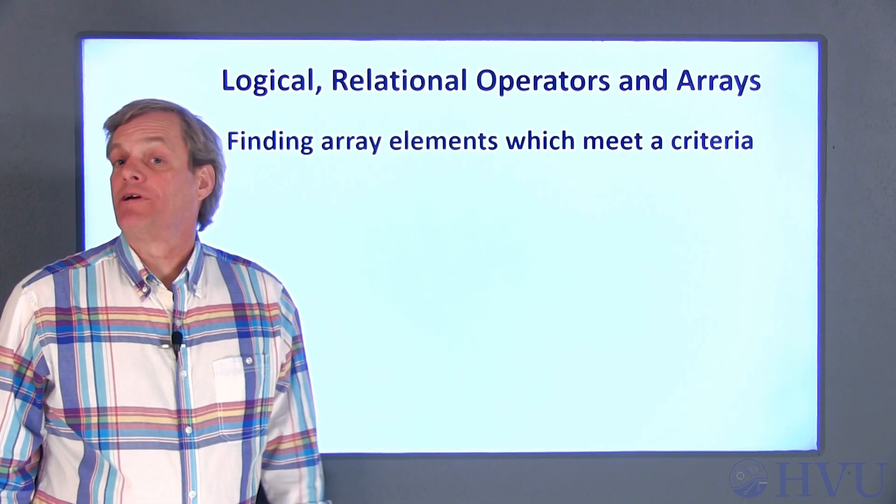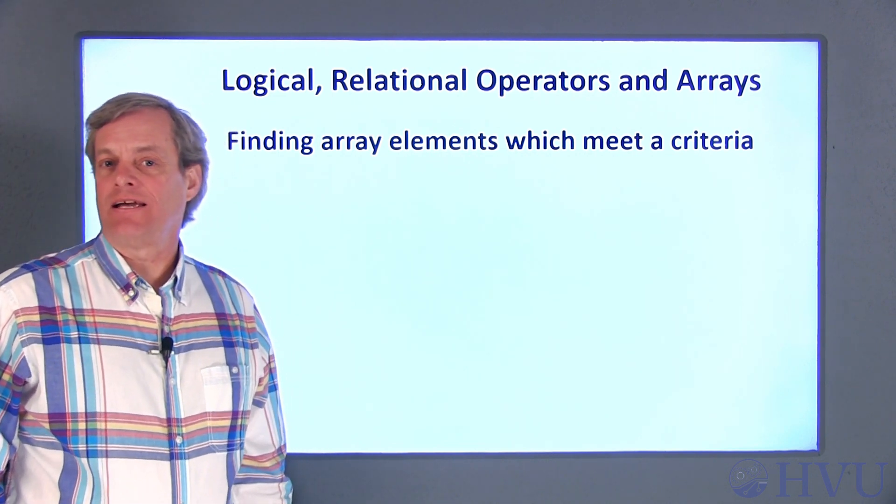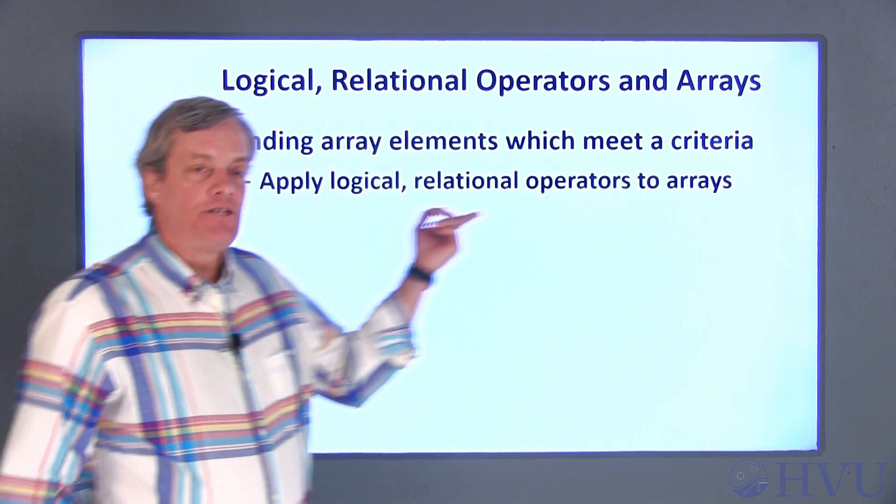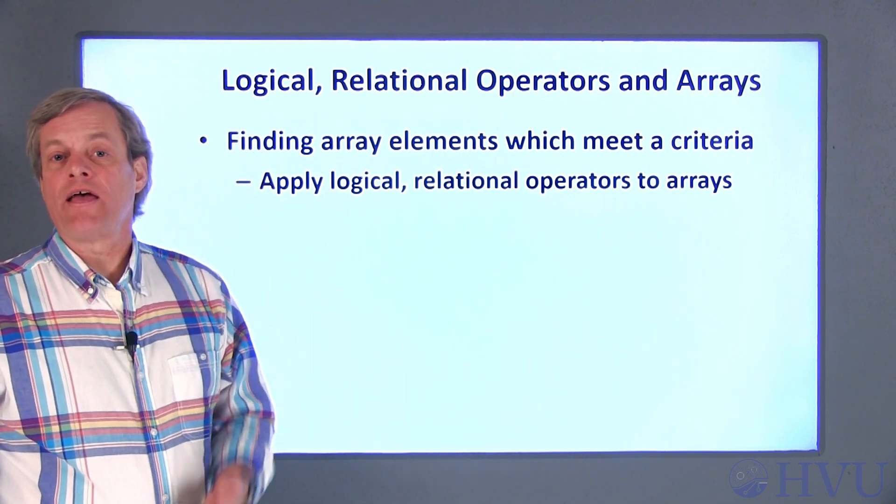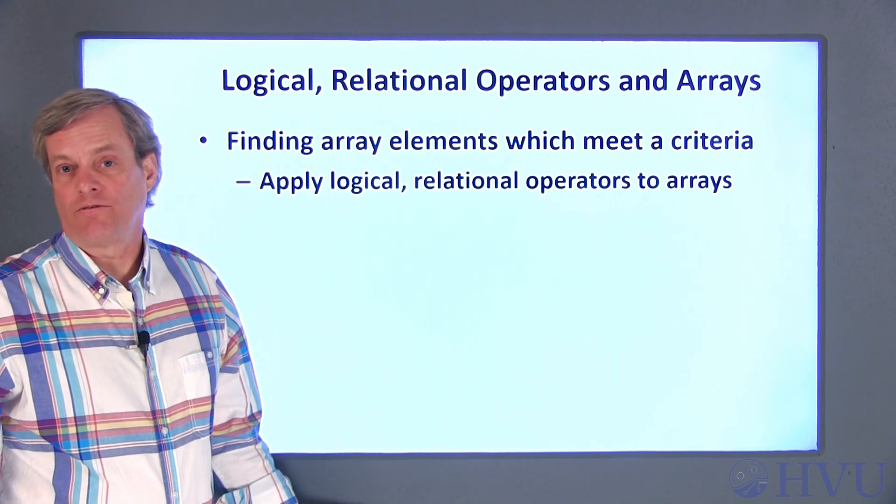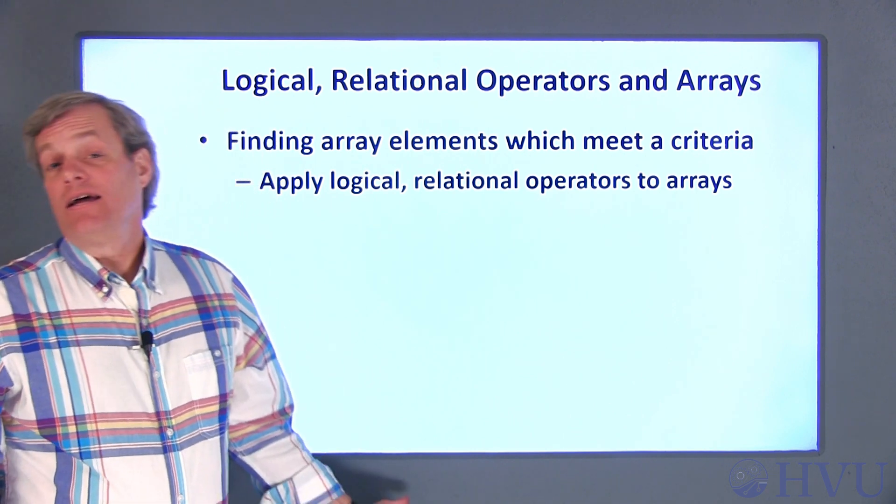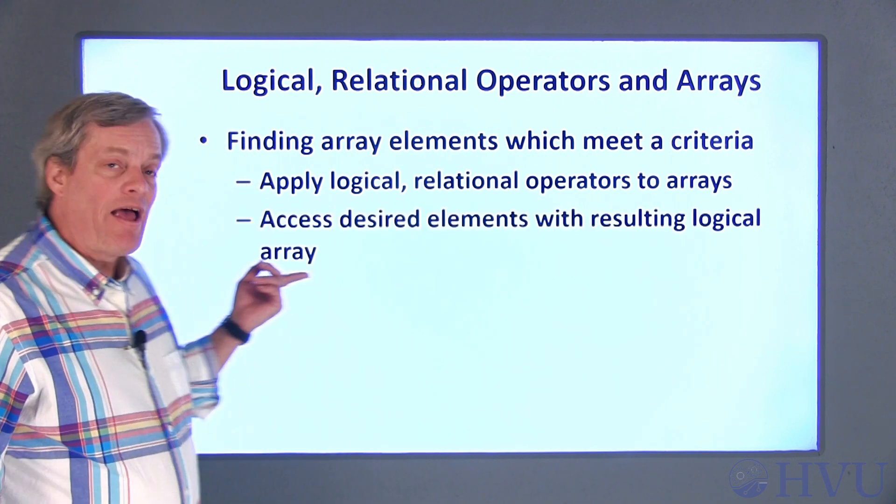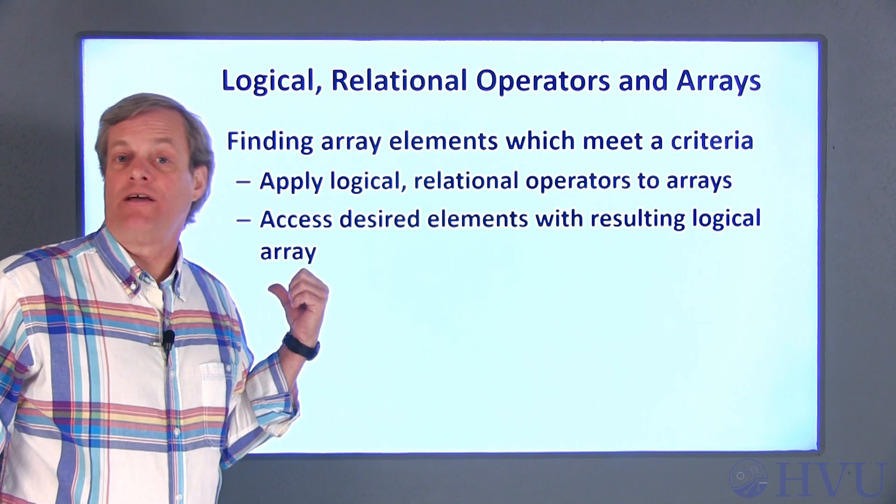Since LOGICAL and RELATIONAL operators automatically return LOGICAL values, they are really easy to use to extract elements of an array that meet certain conditions. You can apply the LOGICAL and RELATIONAL operations to an array. The operators will return an array of LOGICAL values which indicate which elements of the array meet the LOGICAL or RELATIONAL criteria. ONEs are in the locations corresponding to elements that meet the condition, and ZEROs are in the locations where the elements don't meet the condition. This LOGICAL array can then be used to access the elements of the original array that meet the condition.